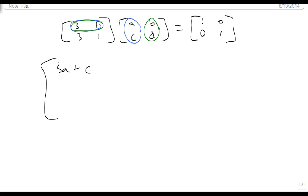Then we get a 3B plus D from our second one, and a 3A plus C from our third one, and a 3B plus D from our fourth one.